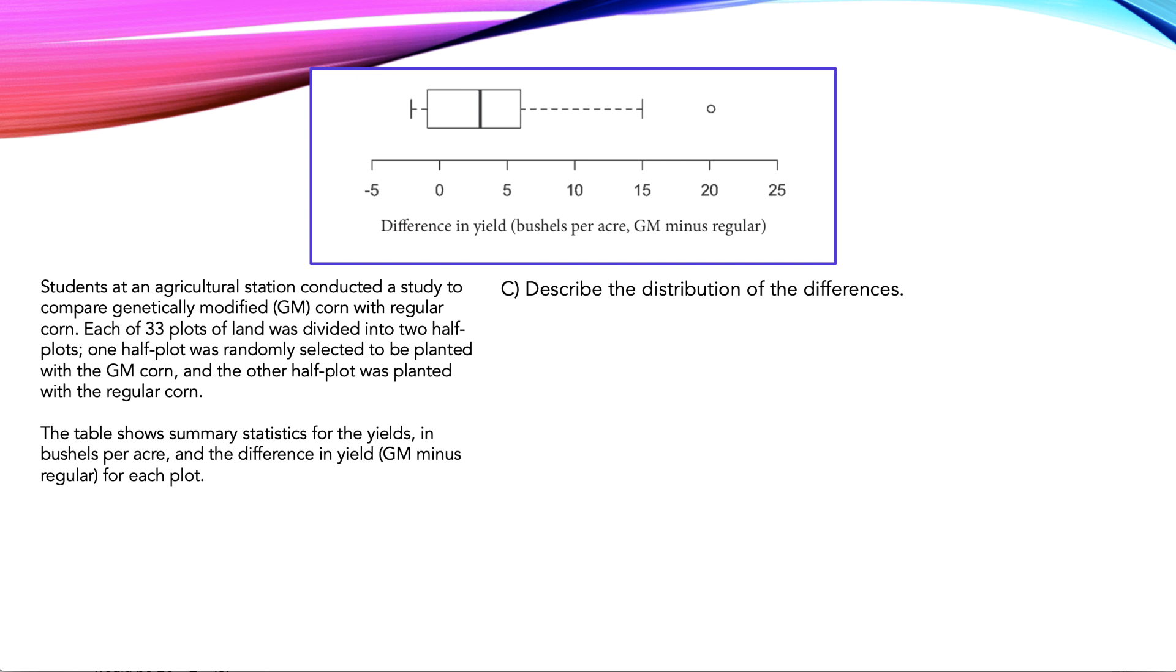For the next part, we're given a box and whiskers plot and we're told to describe the distribution of the differences. When you have one of these questions, think of the nice toasty socks on your feet, except your socks don't have a K. So what is the shape of our graph? It's definitely skewed right because we have this long tail over here as well as this outlier. Outliers, we have this outlier, this dot here at 20.